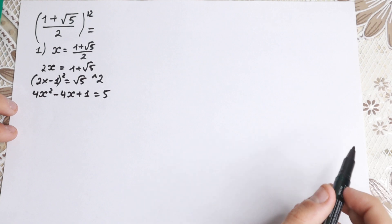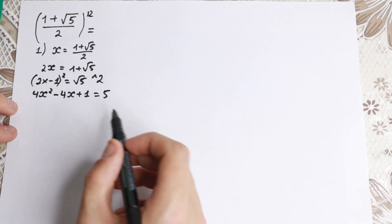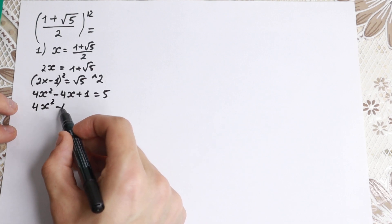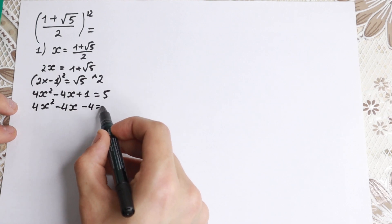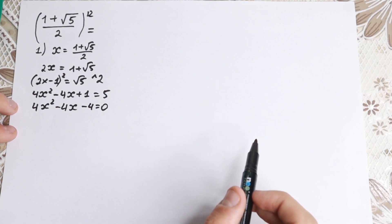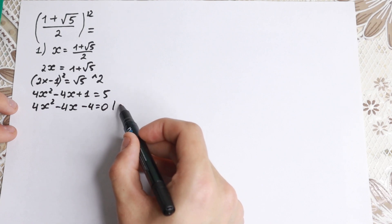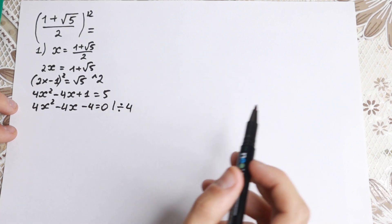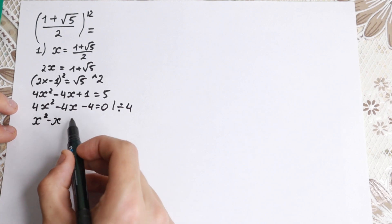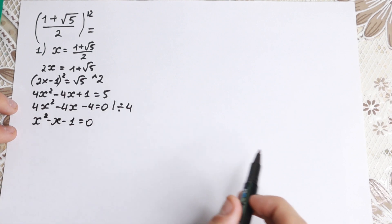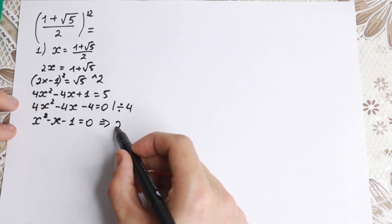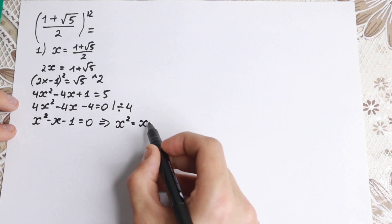Bringing the 5 to the left-hand side, we get 4x² minus 4x minus 4 equals 0. This is a quadratic equation. Dividing through by 4 gives us x² minus x minus 1 equals 0. But we don't need to solve it — we only need to note that x² equals x plus 1. This is the key moment in this problem.